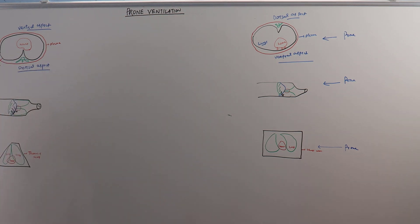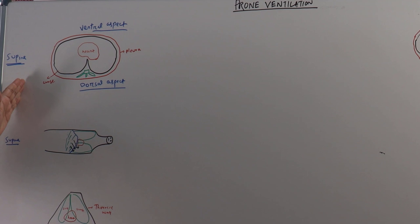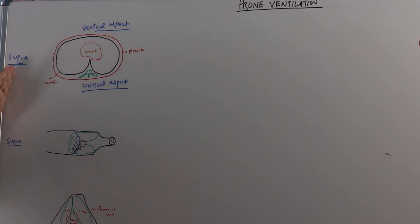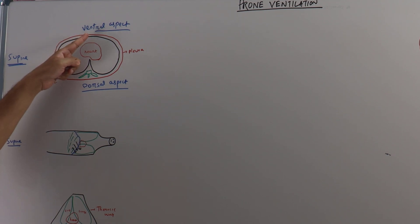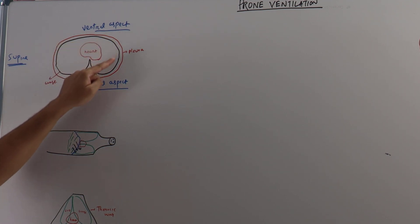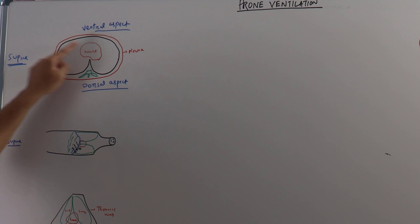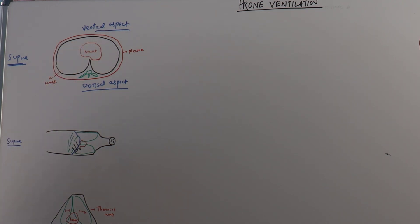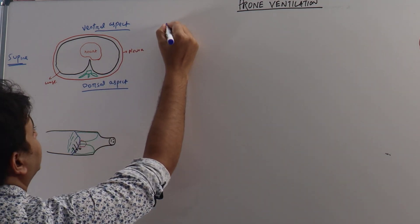Let us discuss from this diagram. This is a patient who is lying supine. This is the ventral aspect where the sternum lies, and this is the dorsal aspect where the vertebrae lie. This is the chest wall with pleura, and these are the lungs and heart. Now, what happens in an ARDS patient when he lies supine?